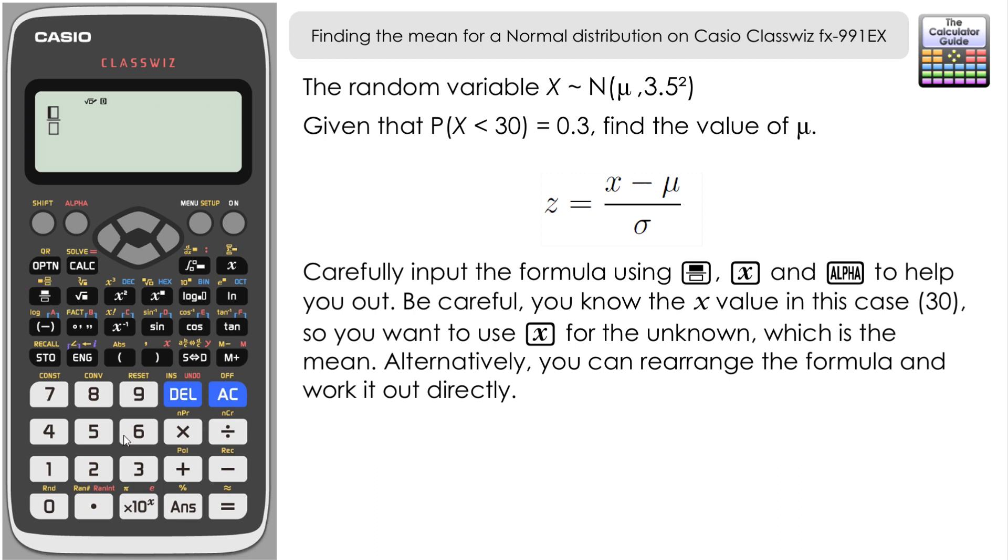Start with the fraction button and then it's 30 minus our mean which is unknown so we're going to use x in this case. Navigate to the bottom and we want to input our standard deviation of 3.5. Navigate right and then we want equal. So it's alpha and calc which gives us an equal sign in our formula.